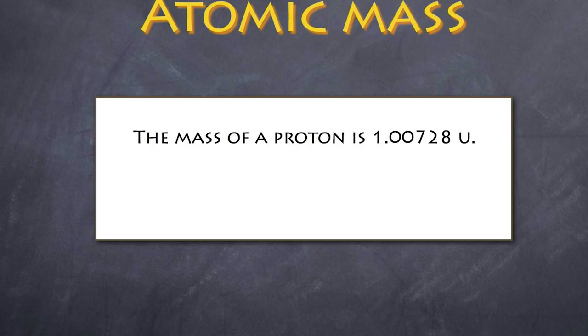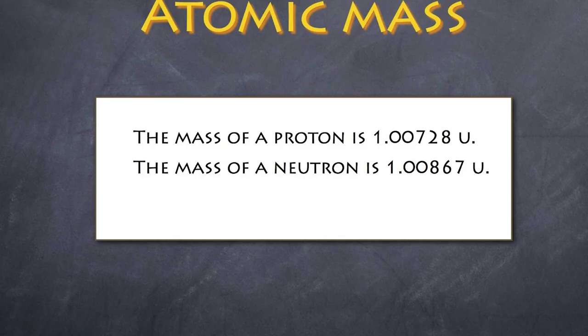So as a result the mass of a proton in atomic mass units or AMU is 1.00728. The neutron is slightly heavier at 1.00867 and if we wanted to know the atomic mass unit of an electron it's 0.00055.